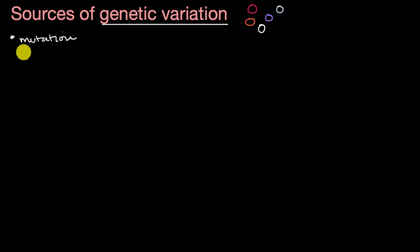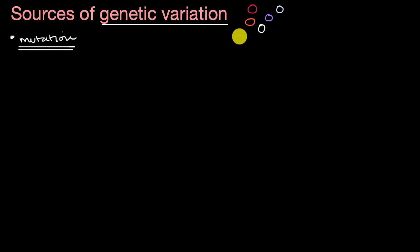Cells are incredibly accurate when they are copying DNA, but there are going to be some errors. Most of these errors can oftentimes break the organism in some way or might not matter at all. But every now and then, some of these errors — either as an individual base pair change, or maybe cumulatively — can produce a different phenotype and potentially a phenotype that has an advantage.